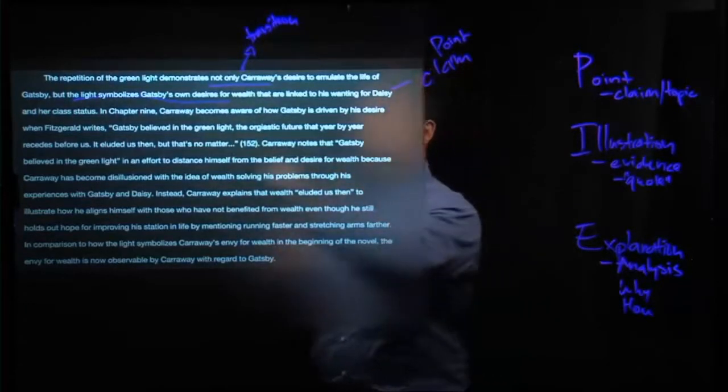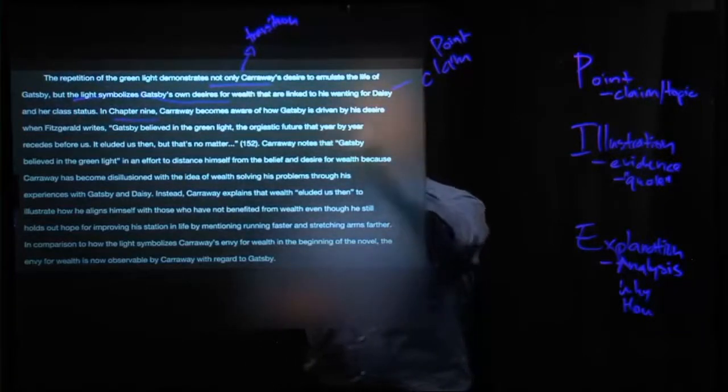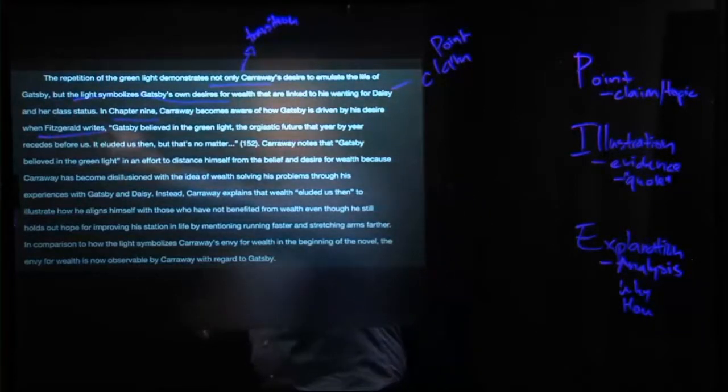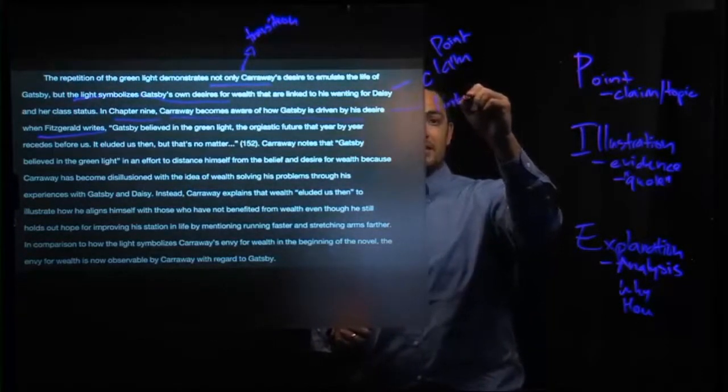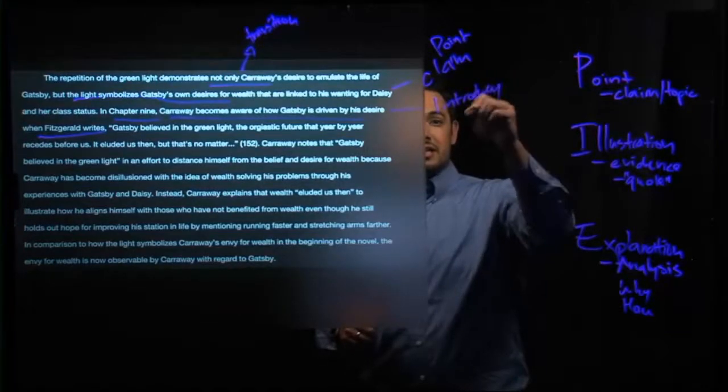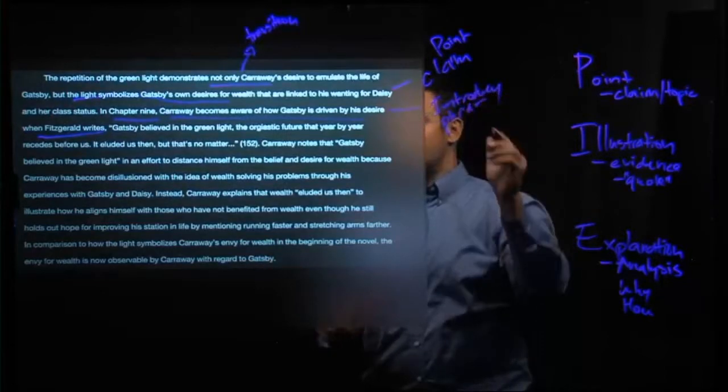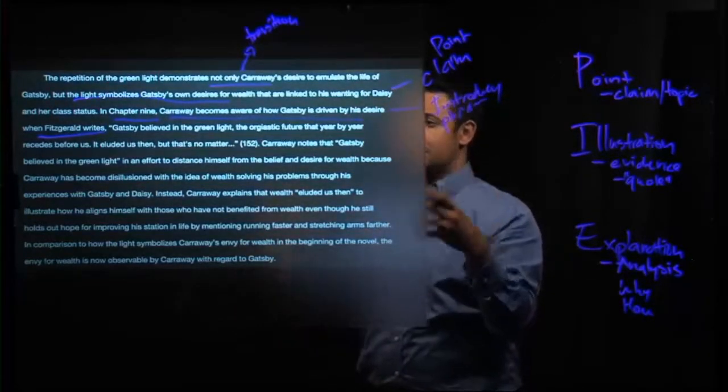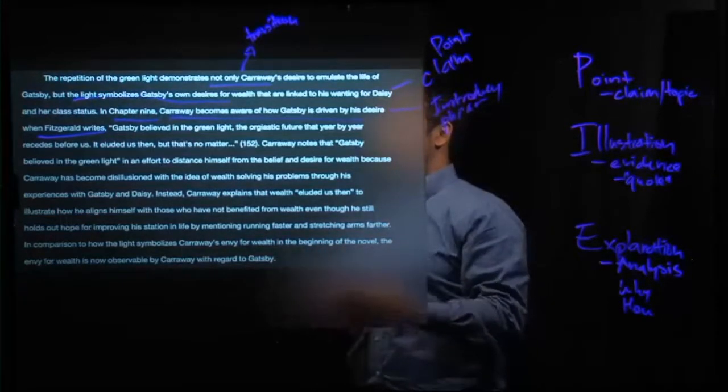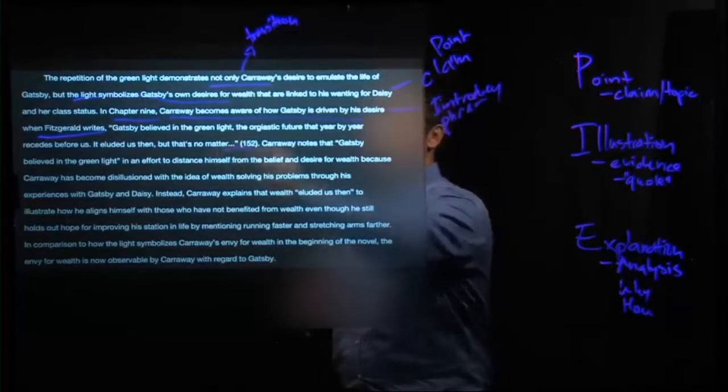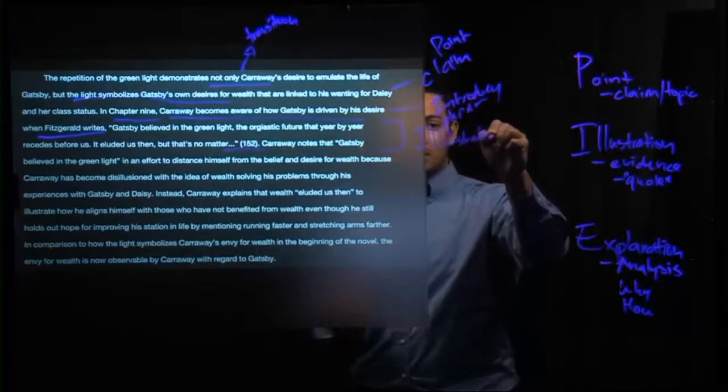And then we can see in the next part, it's set up with, in chapter 9, Carraway becomes aware of how Gatsby is driven by a desire when Fitzgerald writes. This right here is a nice little introductory phrase. And that's sort of setting us up to say, we are going to have a great quote following this. And then we have a quote that says, 'Gatsby believed in the green light, the orgiastic future, the year by year, decades recedes before us, it eluded us, but no matter.' That of course provides our nice illustration in the form of a quote.